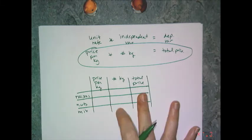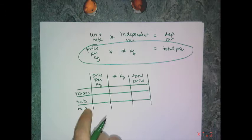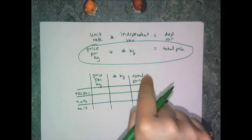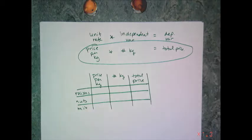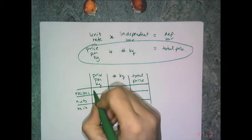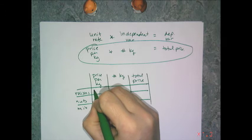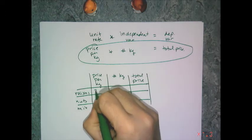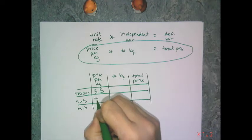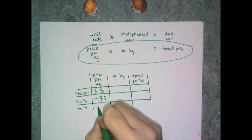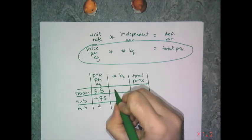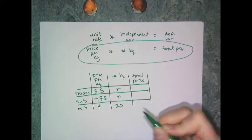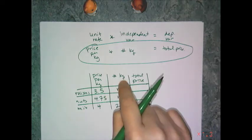It's pretty straightforward. You have your components, the whole mixture, and then your two attributes that, when multiplied together, give you the dependent variable. Then I just plug in the things I know: raisins were $3.50, nuts were $4.75, and the mix was $4.00. The quantities are R, N, and 20, right?